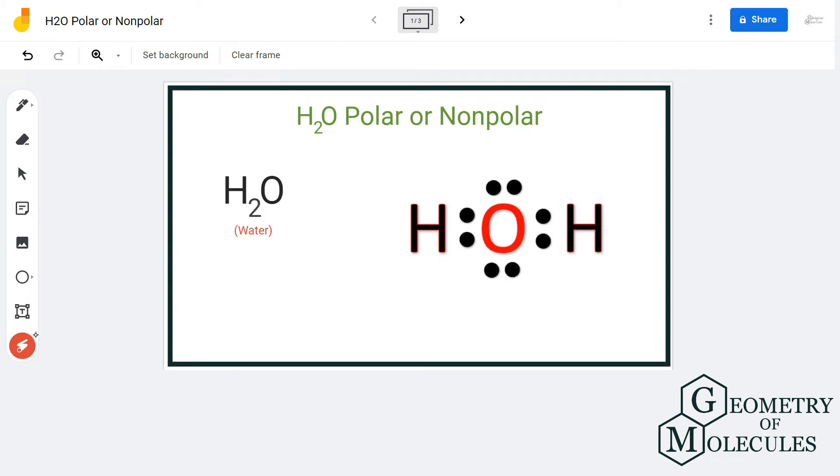This is the Lewis structure of H2O, in which both hydrogen atoms are sharing one valence electron of the oxygen atom. But still, there are two lone pairs of electrons on the oxygen atom. Because of this asymmetric distribution of electrons, there are chances that this molecule could be a polar molecule.